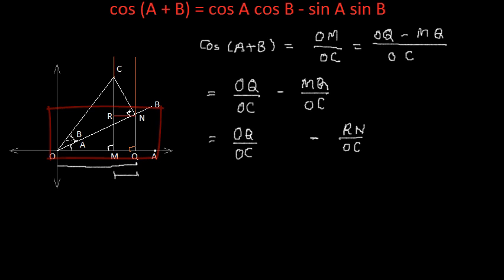So, this is the common line. ON is the common line between both these triangles. So, if I multiply and divide it by ON, the value of this term will remain same.